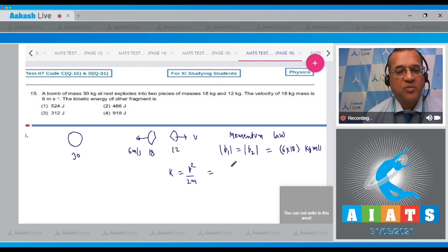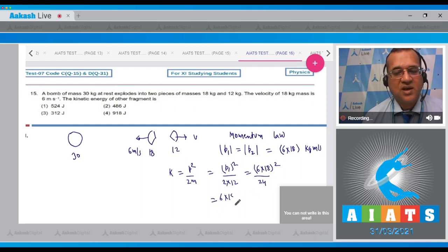And momentum, this has the momentum as p₁² divided by its mass 12. The momentum is equal, so that means (6 into 18)² divided by 24. So we'll solve this: 6 into 18, 6 into 18 divided by 24, and that comes to be 486 joule. So therefore the correct option is the second one.